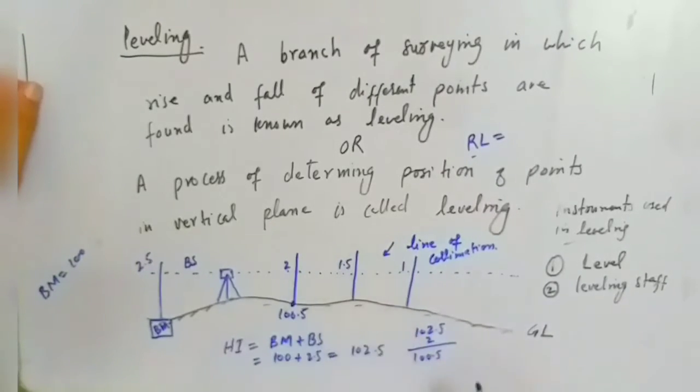Similarly here will be 102.5 minus 1.5, that will be equal to 101. And similarly here you subtract 1 from 102.5, the reduced level will be 101.5.